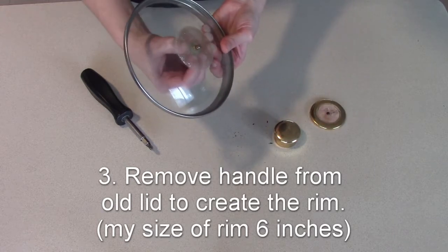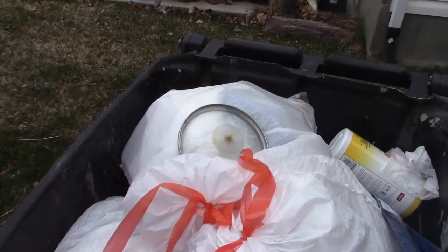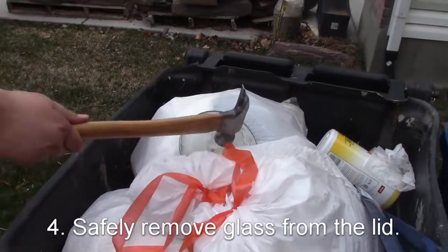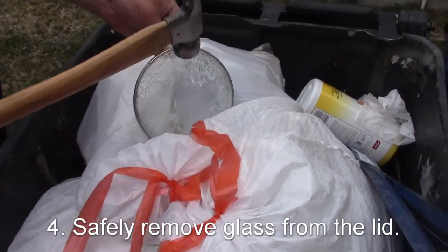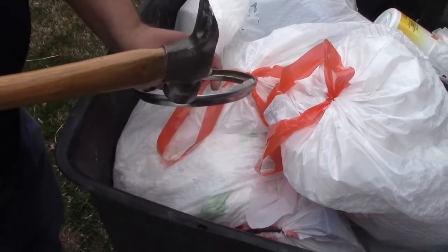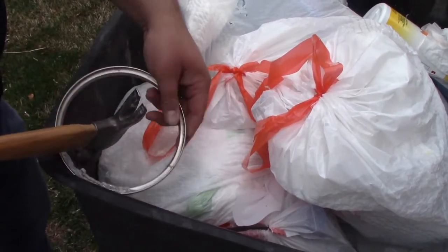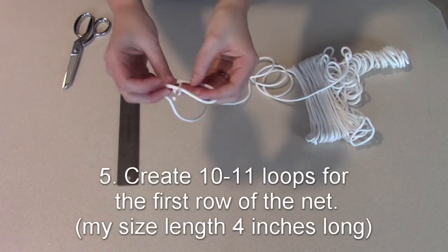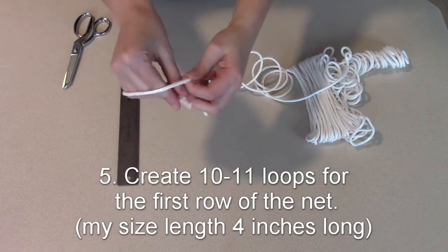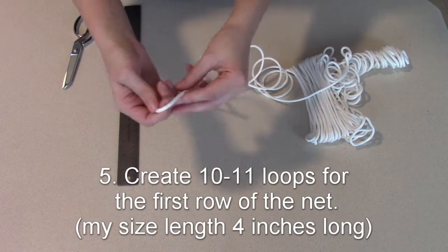And then I found this lid that we really don't use at all for our cooking. It's kind of old and rusted and stuff, and I had my husband remove the glass safely and I removed the top handle. And that's going to be the rim of the basketball.